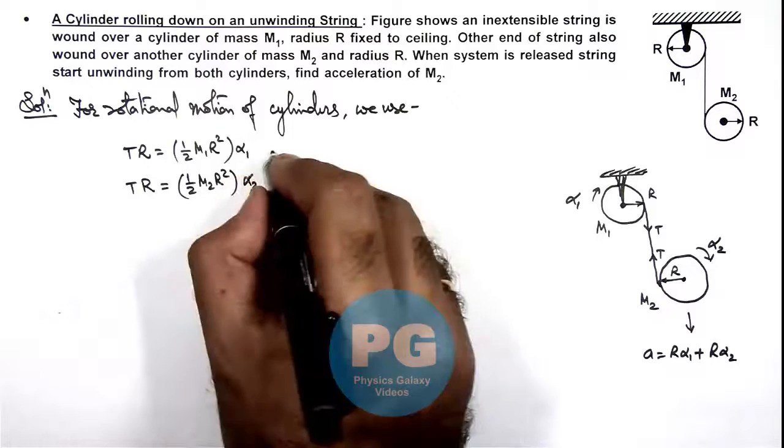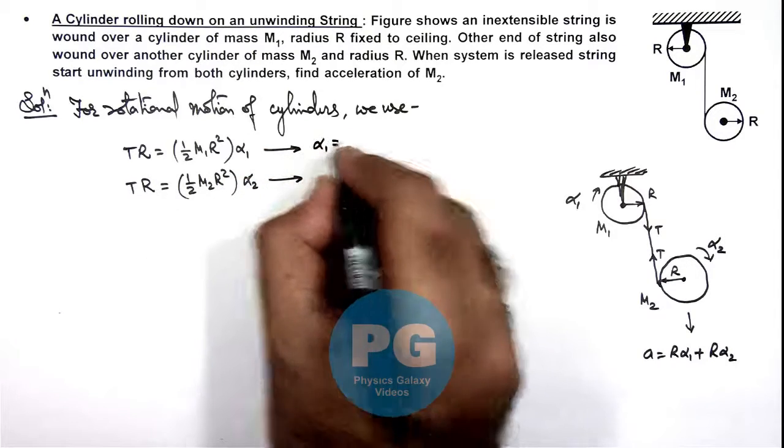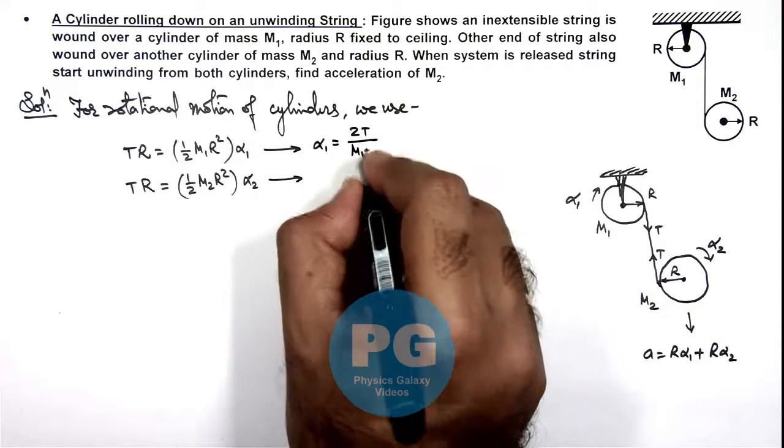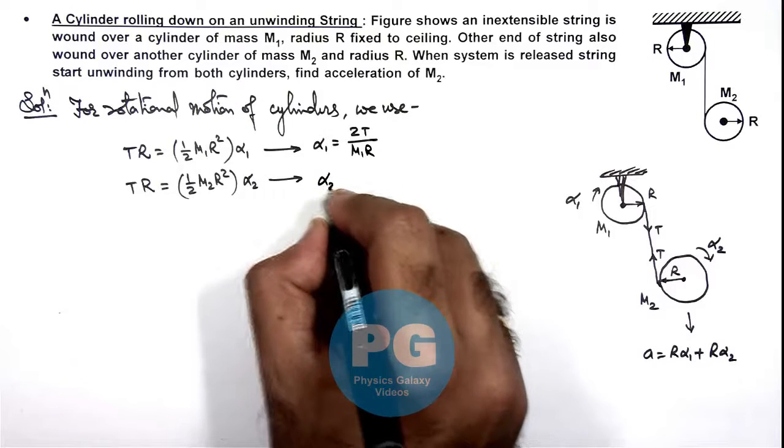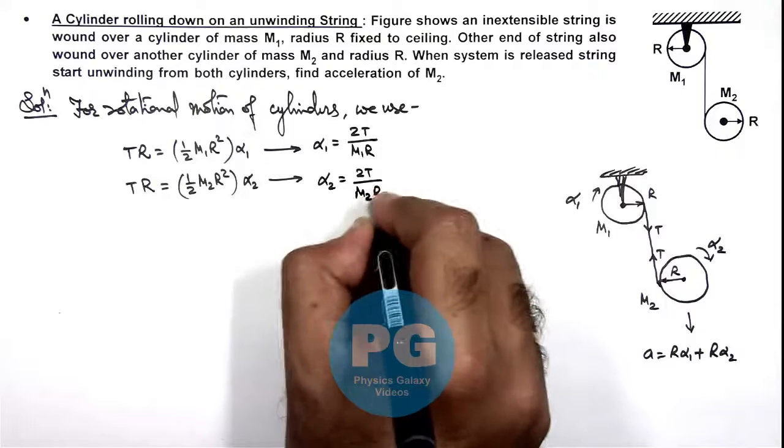So from these equations we'll get the values of alpha 1 and alpha 2. This will be 2T divided by m1 R, and alpha 2 will be 2T divided by m2 R.